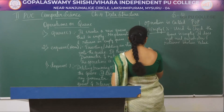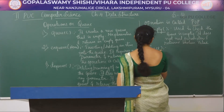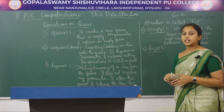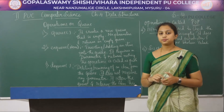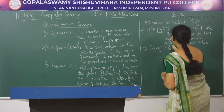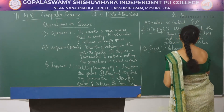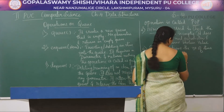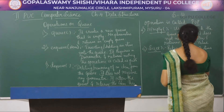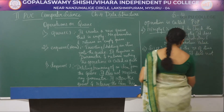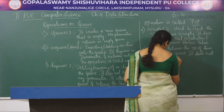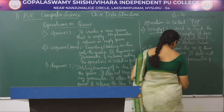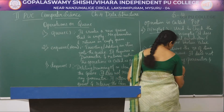The last operation is the size function, which is used to return the number of items present in the queue. It does not require any parameter but returns an integer value.